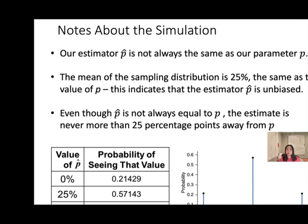Even though the sample proportion is not always equal to the population proportion, the estimate is never more than 25 percentage points away from P. Even though you get 0%, they are not more than 25% away from P. So keep in mind: sample proportion is unbiased — this is a good estimator.